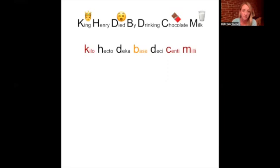So the way we learn those is King Henry died by drinking chocolate milk. So that sounds like a horrible way to go but it's an easy way to remember kilo, hecto, deca, the base unit, desi, centi, and milli.